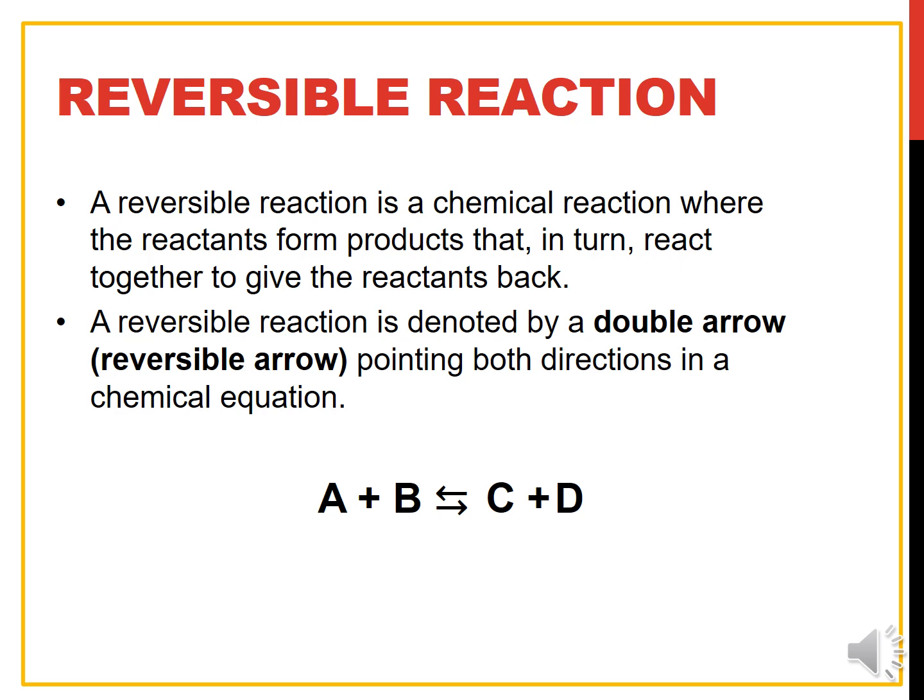Before we proceed with Chemical Equilibrium, we need to know what is Reversible Reaction. Reversible Reaction is a chemical reaction where the reactants form products that in turn react together to give the reactants back. So this is an example of Reversible Reaction where A and B is the reactant and C plus D is the product. The Reversible Reaction is denoted by a double arrow which referring for the Reversible Arrow pointing both direction towards the product and the reactant.